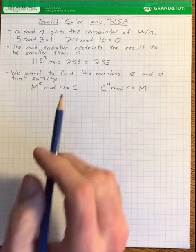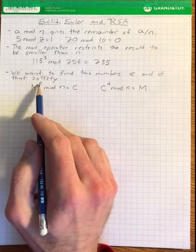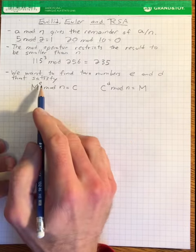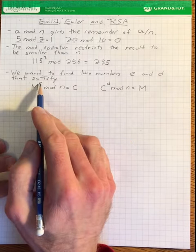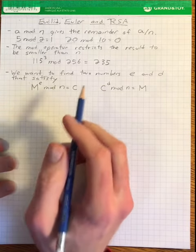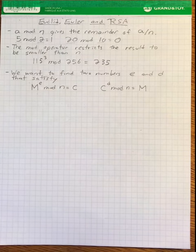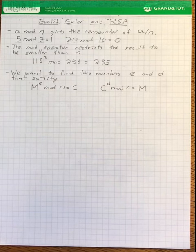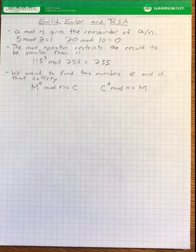To summarize where we are now: we want to find two numbers E and D such that we can take our plain text to the exponent of E modulo N to produce the ciphertext, and then take the ciphertext to the exponent of D modulo N to produce our plain text. We know this works if D is equal to 1/E, but we want to get away from floating point numbers. We can do this by using something called the modulo inverse, and finding the modulo inverse requires us to get into prime number theory just a little bit.